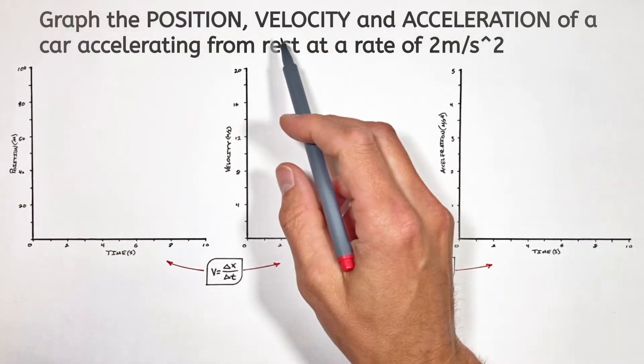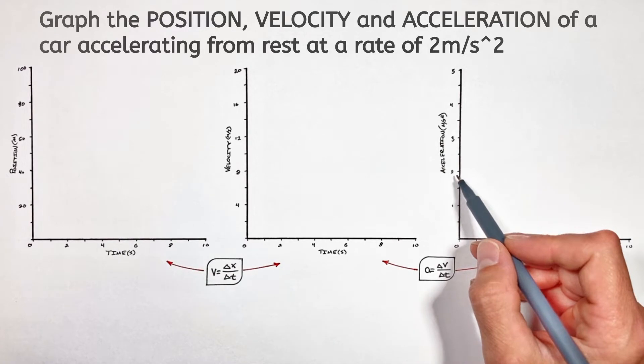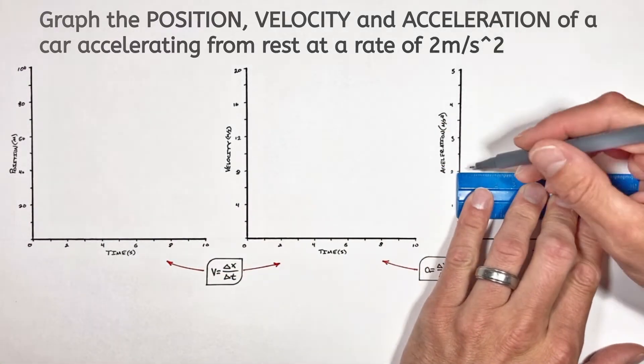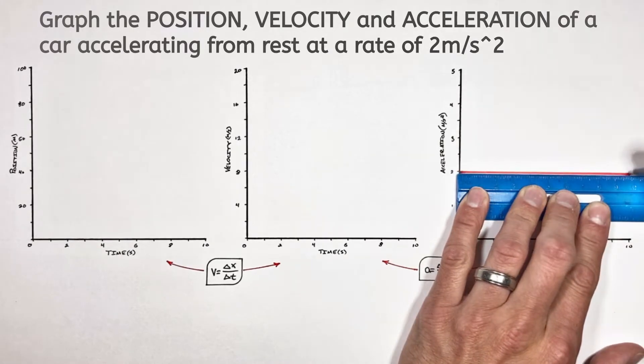Now according to the problem, acceleration is a constant 2 meters per second squared. So in our acceleration versus time graph, we're going to see a constant line with a value of 2.